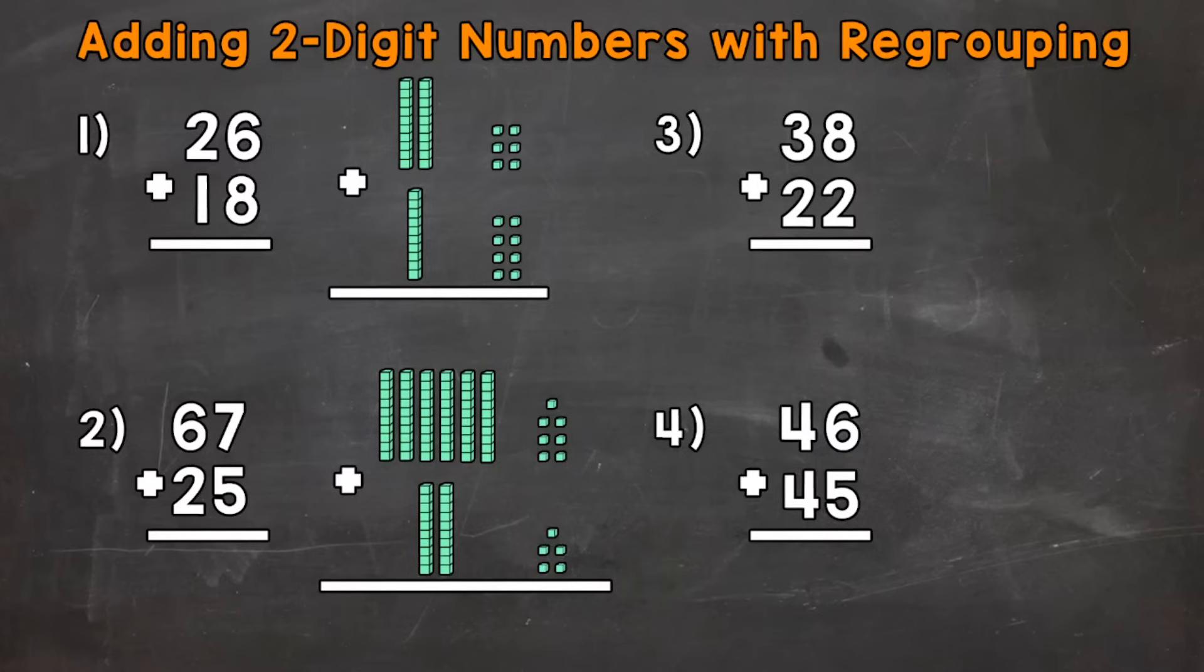Now, when we add whole numbers, we always start with the ones. So we have 6 ones plus 8 ones. That's going to give us 14 ones. But we can't fit 14 into the ones place. We can't fit a two-digit number into the ones place.